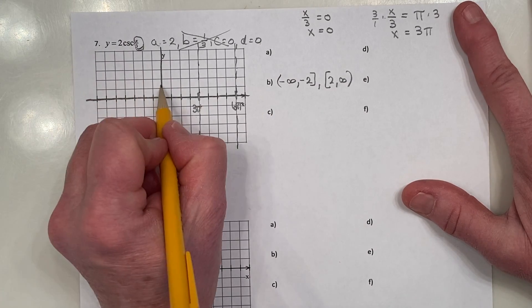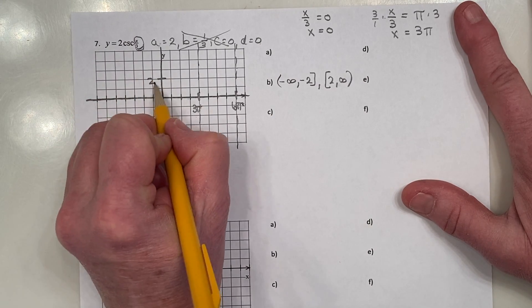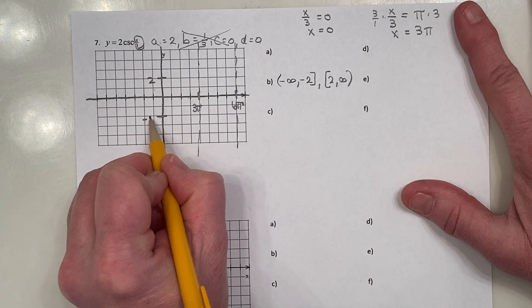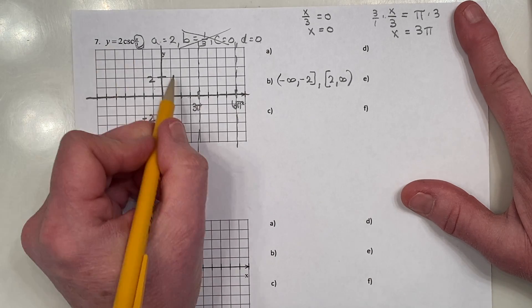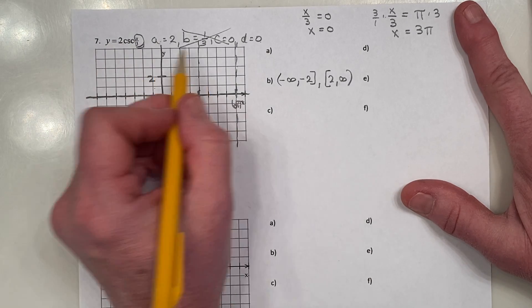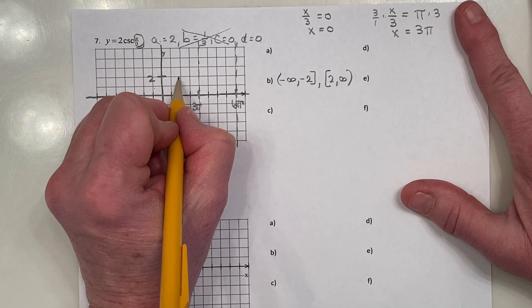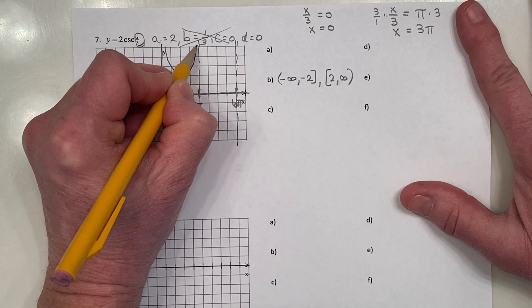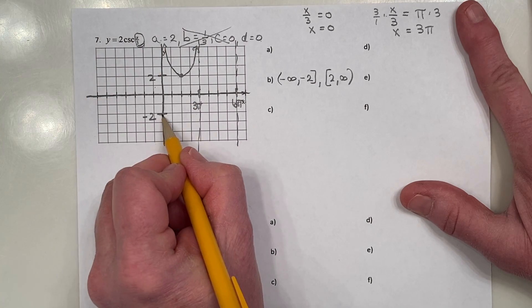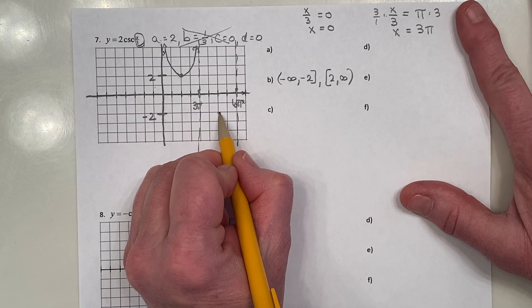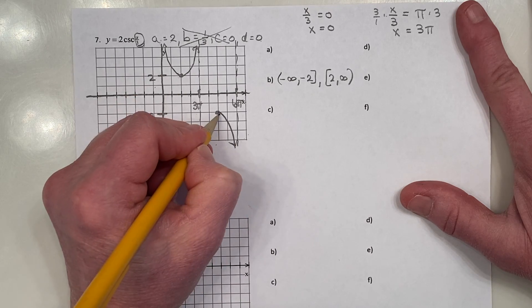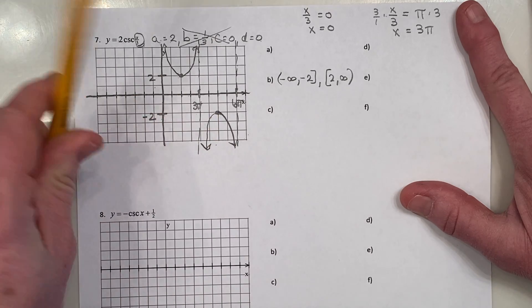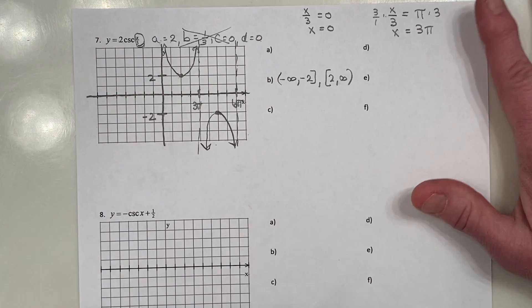So I'm going to start up here at 2 and down here at negative 2. There's no reflection. This is cosecant. This first parabola opens, parabola shape graph opens up. Go like that. And head down to y equals negative 2, halfway in between. Put our maximum and open downward. Yes, we still have a gap, so we're good to go.